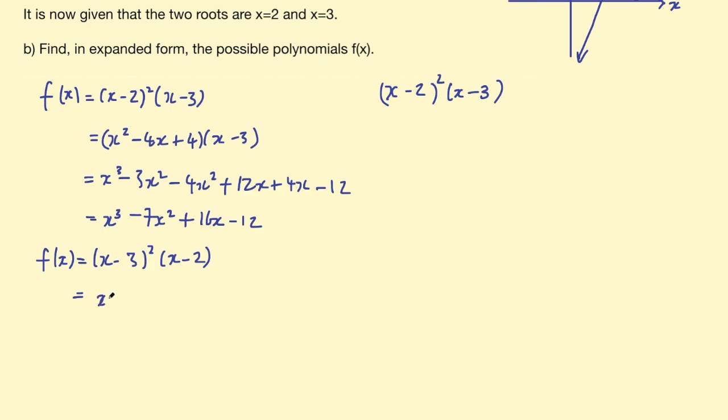And then expanding the second one, I would have (x² - 6x + 9)(x - 2). And expanding those we have x³ - 2x² - 6x² + 9x - 18. Simplifying further, I have x³ - 8x² and I've missed something there - I've missed the positive 12x. Sorry, positive 12x and - 18. So then I have 9 + 12 is 21x - 18. Okay, so that's my second cubic polynomial.